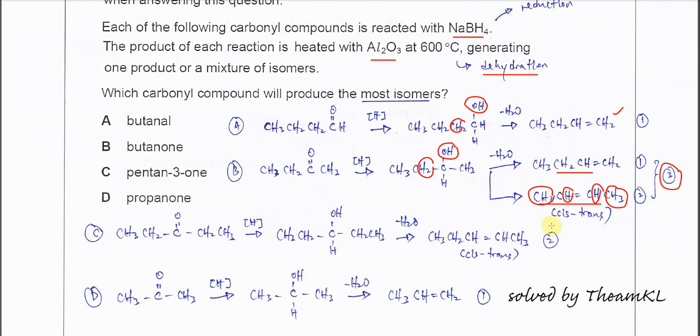Okay, so for pentan-3-one. So this one, after reduction, will form this alcohol. After that, this OH will remove with this or this H—same because they are equivalent—so eventually you'll form this product, and this one can form cis-trans as well. Means total it can form two.